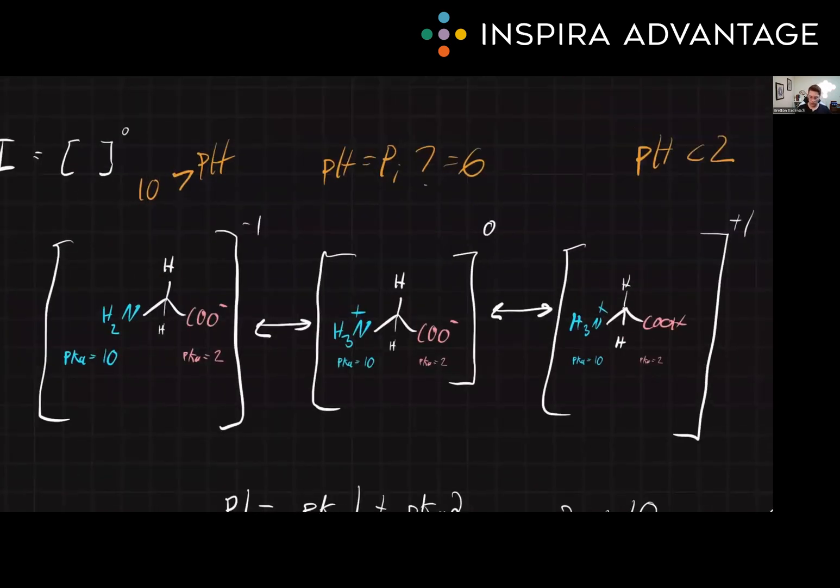This is also known as its zwitterionic form. A zwitterion means it has two different charges. We have a negative charge and a positive charge. So great, we've mastered glycine. But unfortunately, not all amino acids are as easy as glycine.